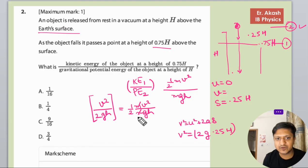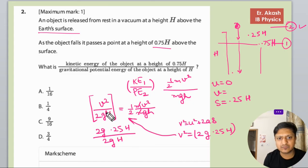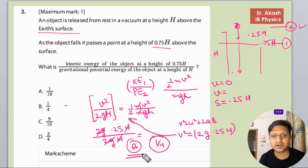Now we will put this v squared value in this equation. So what it will be: 2g times 0.25h upon 2gh. You can write capital H only. So 2g with 2g cancels, h with h cancels, and this 0.25 is 1 by 4. So 1 by 4 is the B option. B option will be the right option.